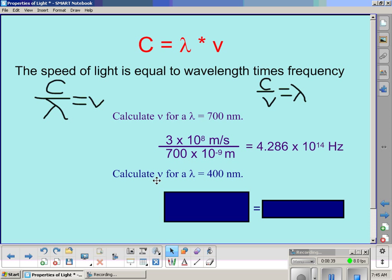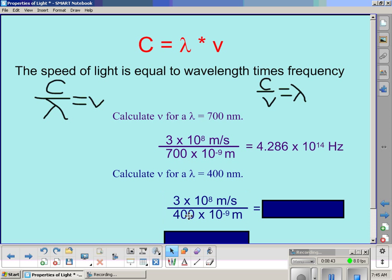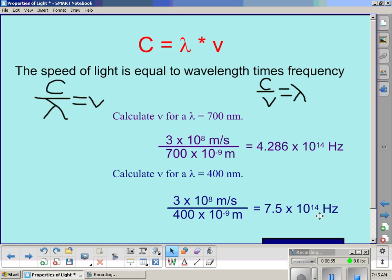So if we want to calculate, again, for frequency, plug things in just like we did up here. Nano stands for 10 to the negative ninth. Watch out for those units. Do some button pushing on a calculator, and you get 7.5 times 10 to the 14th hertz.